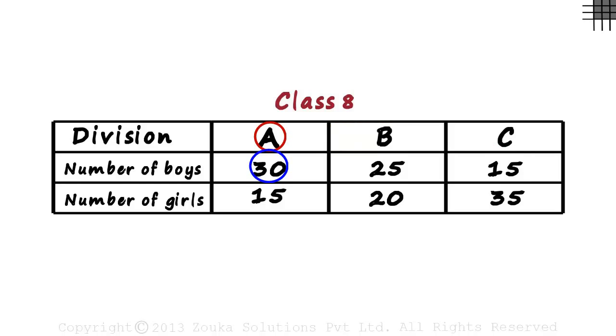Division A had 30 boys and 15 girls. Division B had 25 boys and 20 girls. And Division C had 15 boys and 35 girls.